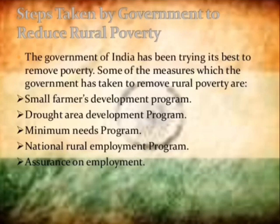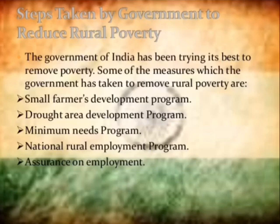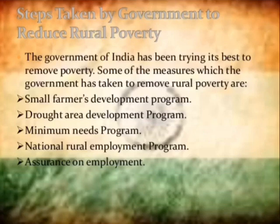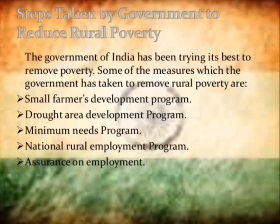Next is the Minimum Needs Program. The government has created programs to meet minimum needs, such as the Public Distribution System (PDS), which ensures that basic necessities like food are available so that the minimum food-related needs of the poor can be fulfilled.